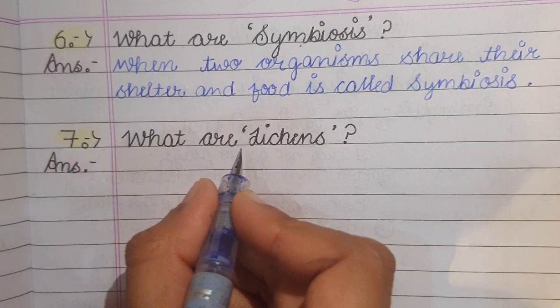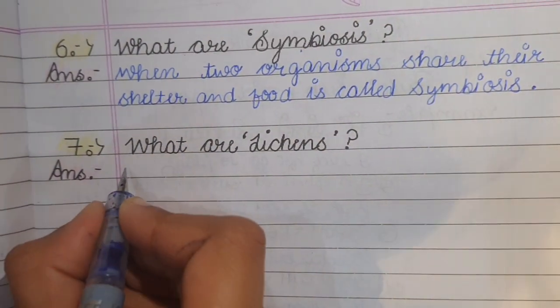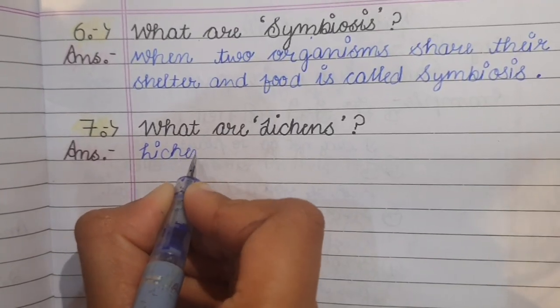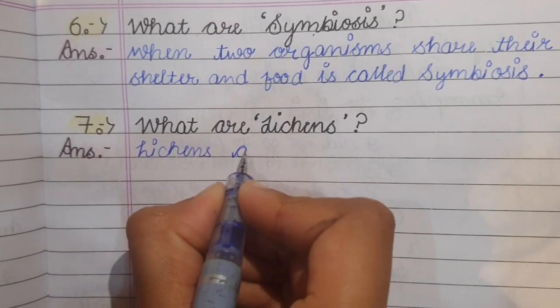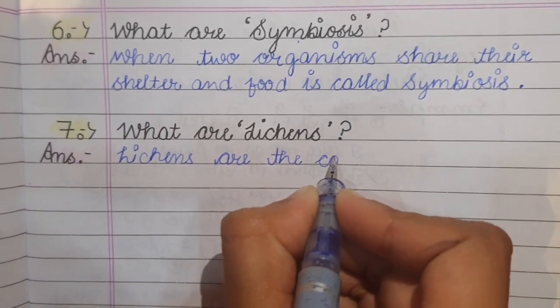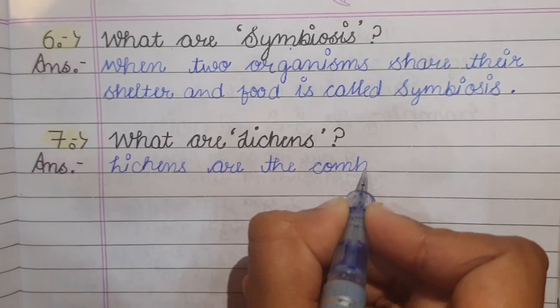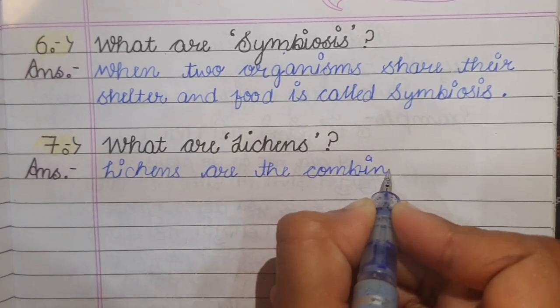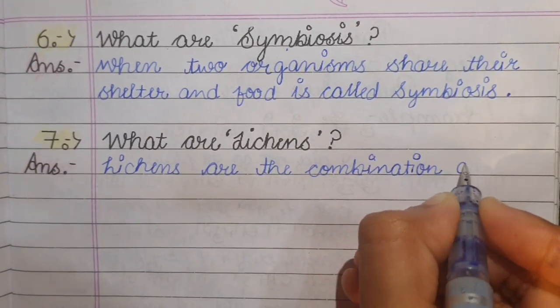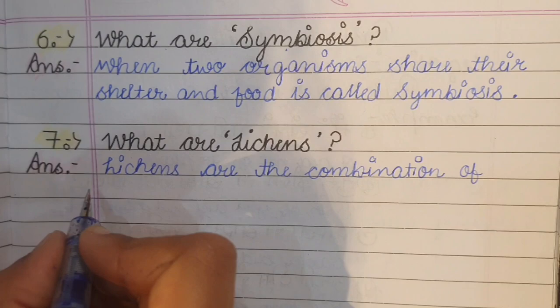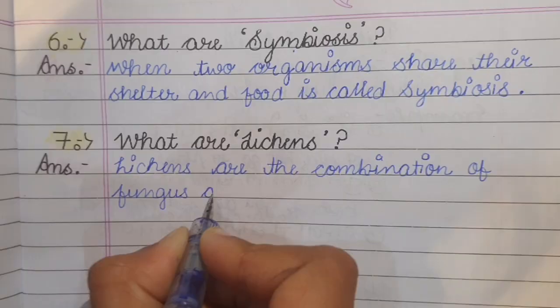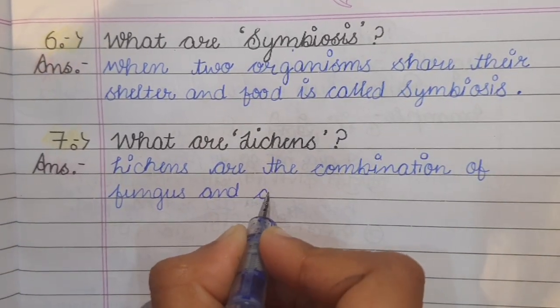Seventh one is what are lichens? Lichens are the combination of fungus and algae.